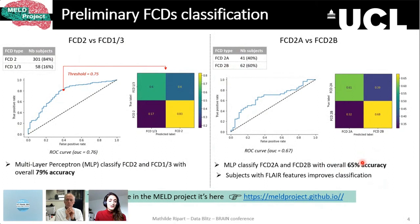To summarize, this large cohort from the MELD project enabled us to highlight important features that distinguish the histopathological FCD subtypes, and also to provide a preliminary classification of these histopathologies. This study is one among others, and for more information about the MELD project and how to join, you can visit our website or visit my poster number 27 in room one. I'll be happy to answer your questions there. Thank you.